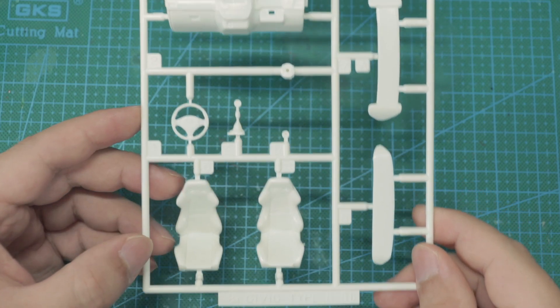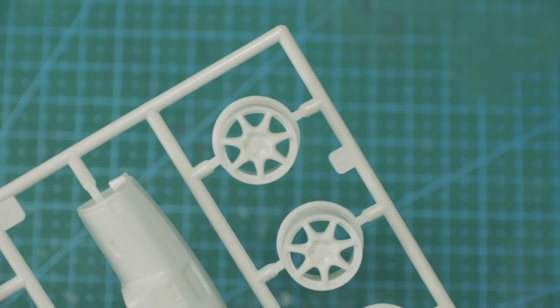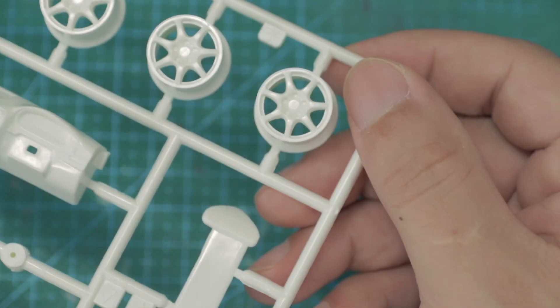All the Type R parts are molded on a separate sprue. I was hoping to find an extra set of wheels, but only the Type R wheels are given in this kit.